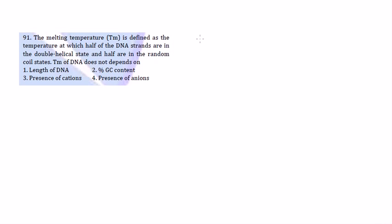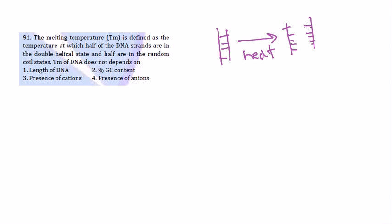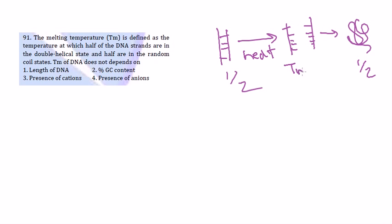The fourth question covers melting temperature (TM), defined as the temperature at which half of the DNA strands are in the double helical state and half are in the random coil state. When DNA is heated it denatures, and the single-stranded DNA randomly coils into a secondary structure. That temperature is called the TM, or melting temperature of the DNA.